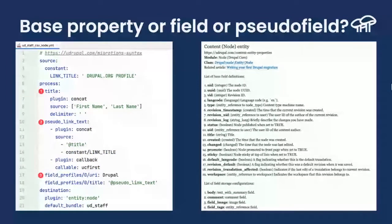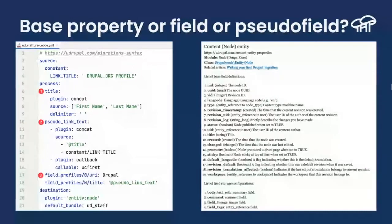One last thing to be mindful of, especially when working with content entities as your destination in a migration, is that you can have base properties — in the case of node, for example, the title, the UID, the type, if it is sticky or not, if it is promoted to the home page or not. Those are called base properties of the entity itself. In addition to that, you can have fields attached to the entity. For example, in an out-of-the-box Drupal installation with the standard profile, you get an article content type with a body field, an image field, a text field.